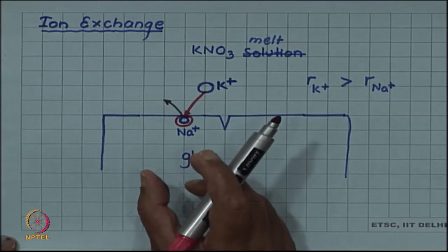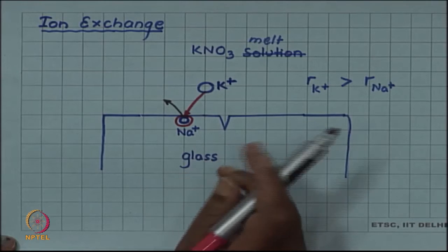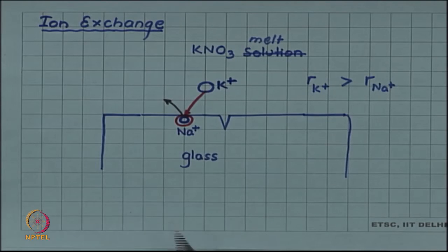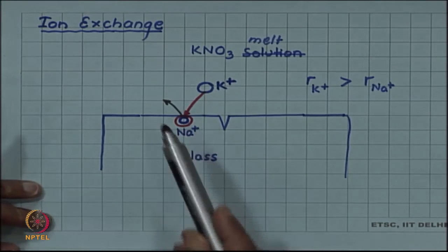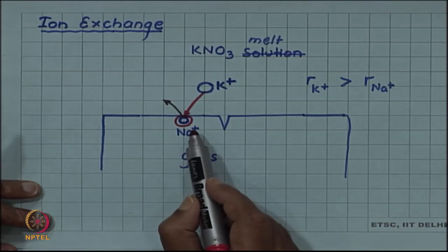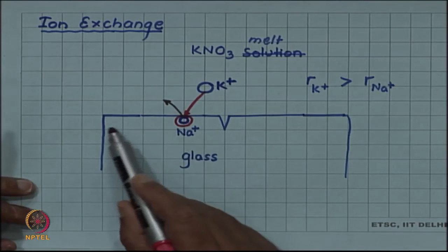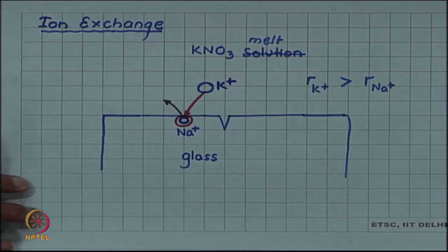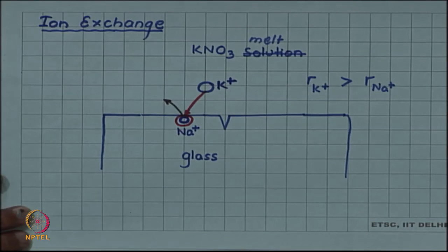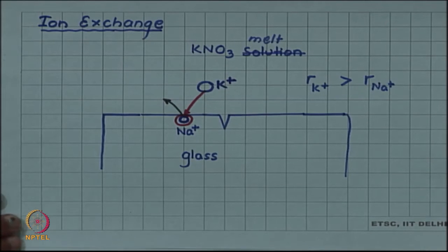In a smaller gap you are filling a larger object, so this leads to compressive strain in the region of the replacement. And since there are several such replacements along the surface because several sodium ions are being replaced by potassium ion, there will be an average compressive stress developing on the surface because of this exchange.